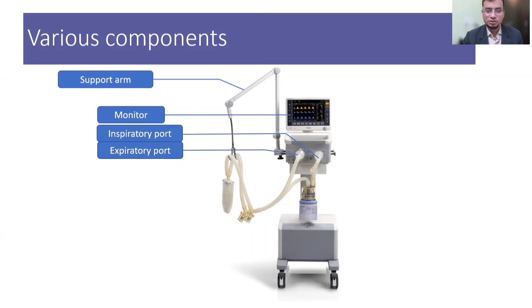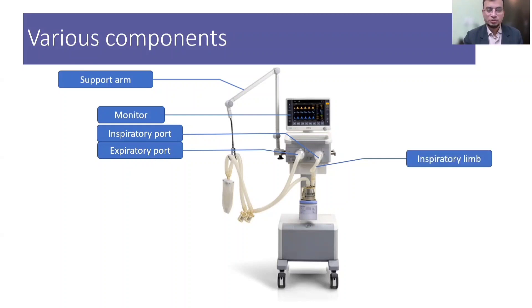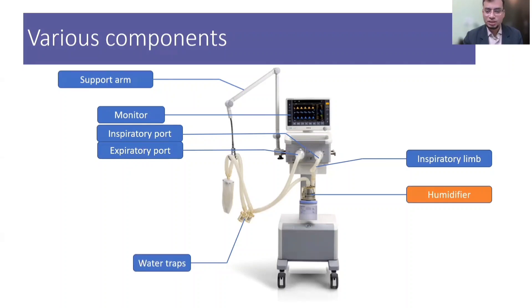The expiratory limb is a part of the breathing circuit that is connected to the humidifier, where gases are heated and humidified before delivery to the patient. This is the inspiratory limb, and from the humidifier gases go to the patient. In the breathing circuit there are two traps called water traps, which collect the condensate from the circuit.